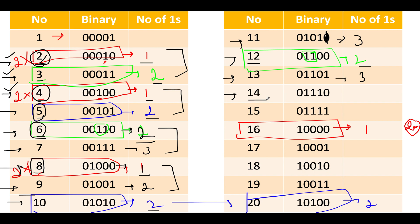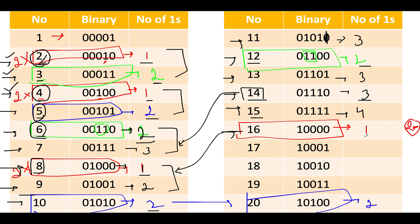For 14, it's even, so divide by 2 to get 7; ones in 7 is 3, so ones in 14 is 3. For 15, which is odd, check 14: 3 + 1 = 4. For 16, divide by 2 to get 8; ones in 8 is 1, so ones in 16 is 1. For 17, which is odd, check 16: 1 + 1 = 2. For 18, divide by 2 to get 9; ones in 9 is 2, so ones in 18 is 2.